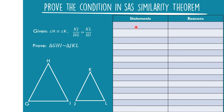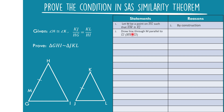Statement one: Let M be a point on side HG such that HM is congruent to KJ. Statement two: Draw a line through M parallel to side GI. For our reason, it is by construction — a line parallel to side GI through M.